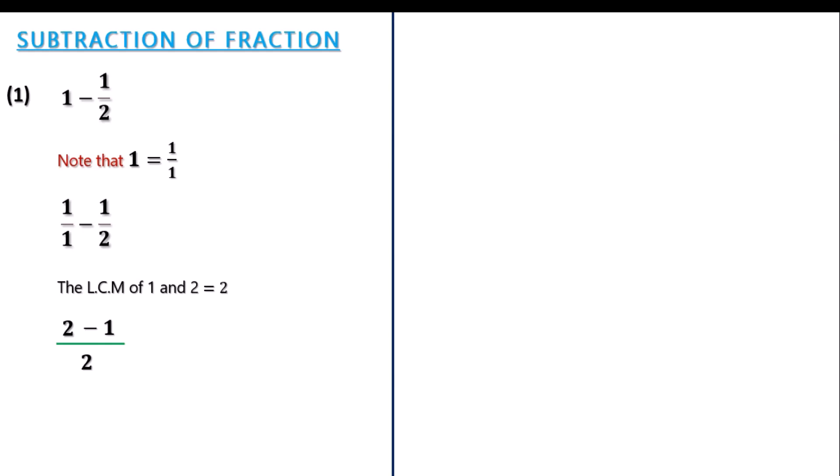We have the second fraction, which is 2, dividing it by the denominator, the LCM, which is also 2. It gives us 1. Then you multiply that 1 by the numerator of the second fraction. It still gives us 1. So 2 minus 1 of the numerator gives us 1, all over 2.